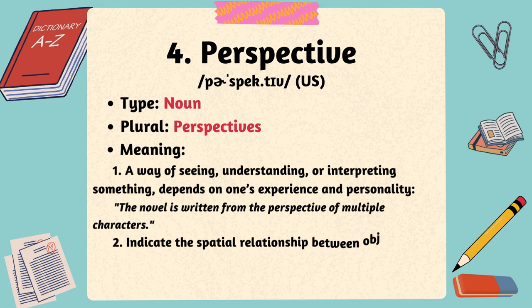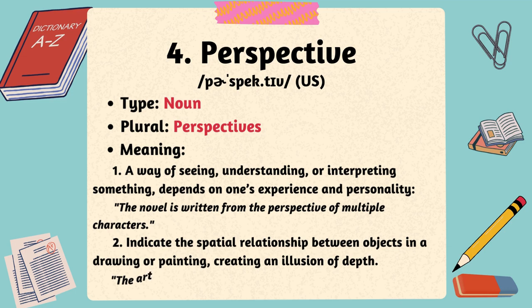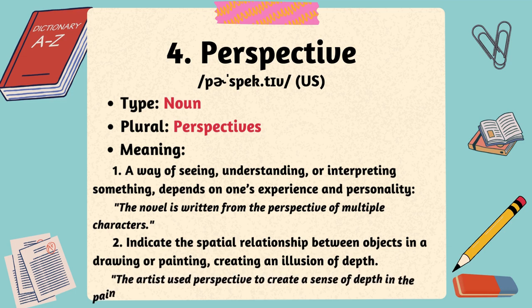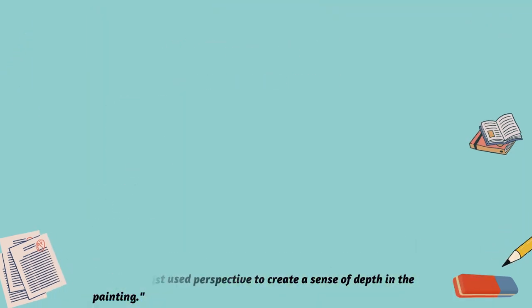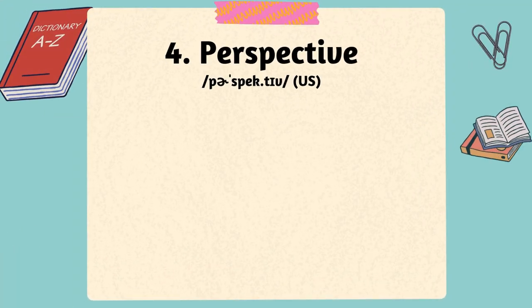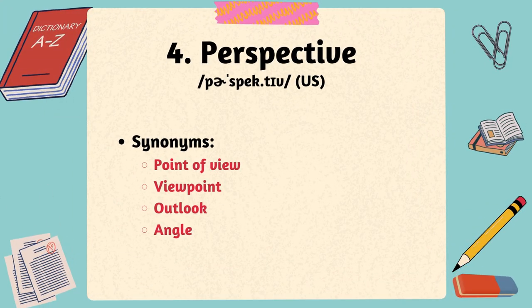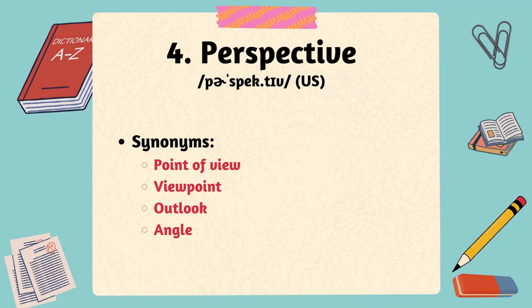Here are some examples of perspective. The novel is written from the perspective of multiple characters. The artist used perspective to create a sense of depth in the painting. Some synonyms for the word perspective: point of view, viewpoint, outlook, angle.